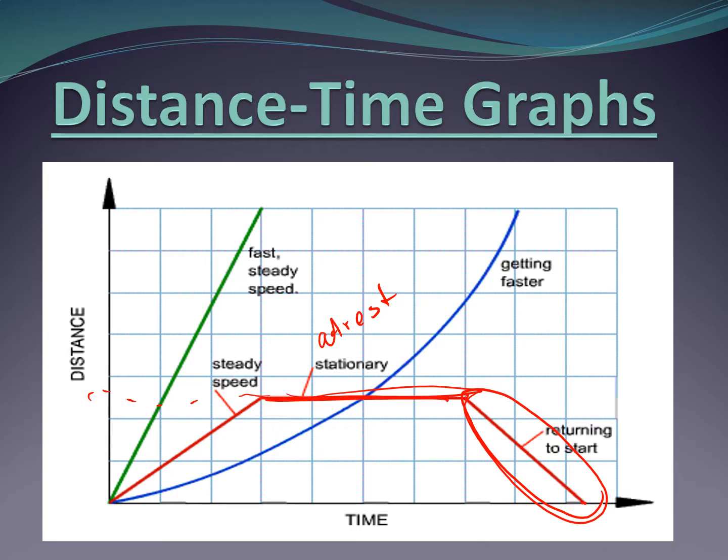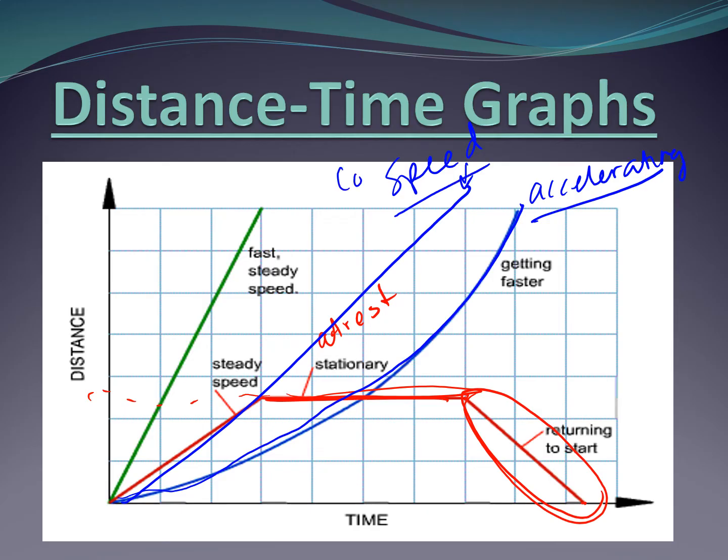The blue line, it says it's getting faster, but to be more specific, and you should write this down, it is accelerating. It's this curved line. If it was just a line like this, then you would have said that's not accelerating. This is just speed. It's just a constant speed, as opposed to the accelerating line.